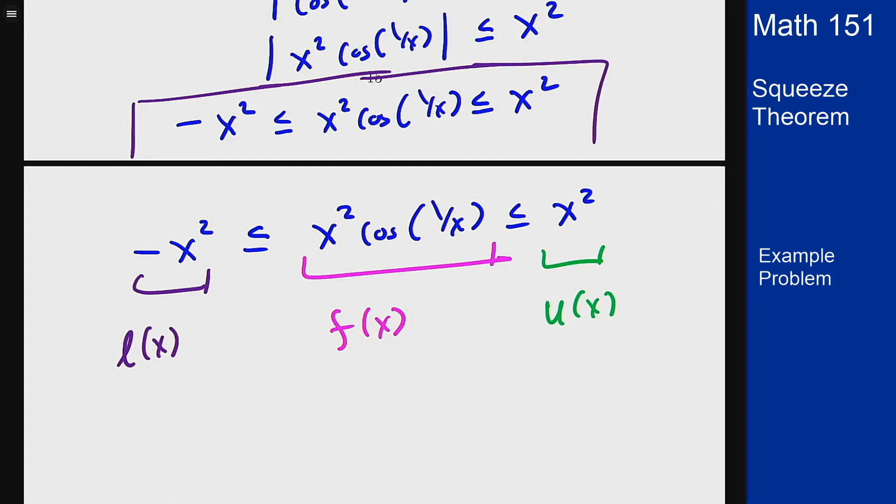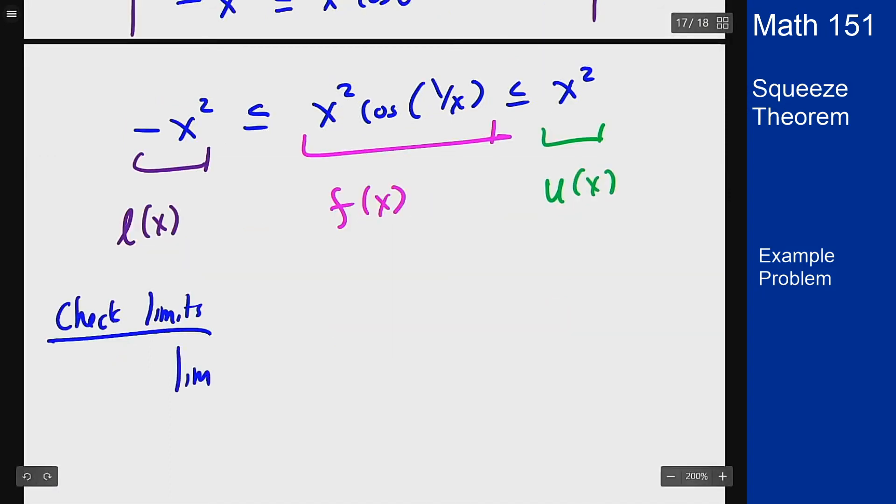The ultimate check now is the limits. So the limit as x goes to 0 of x squared, well that's polynomial so that's just 0, and similarly the limit as x goes to 0 of minus x squared is also 0. There's my u, there's my l, they both go to 0.